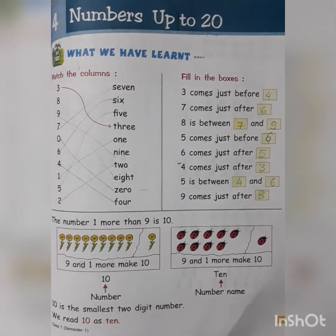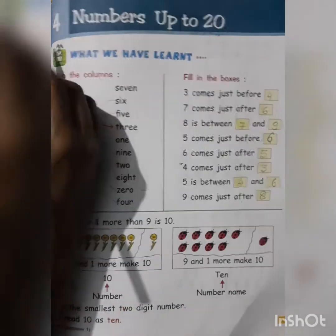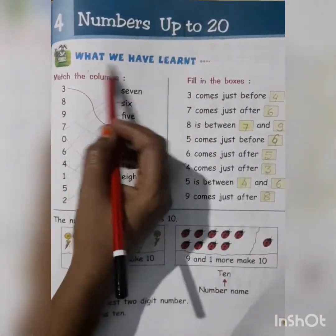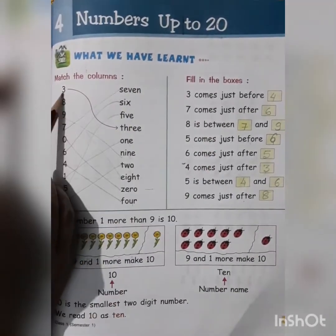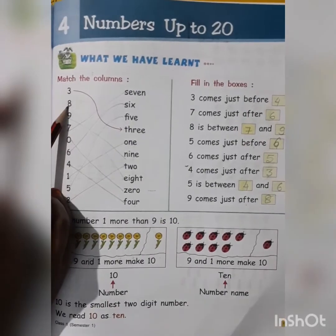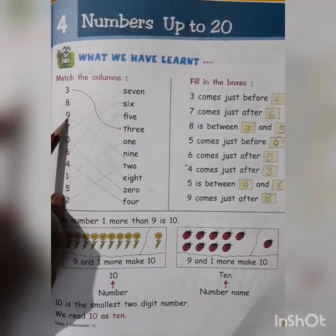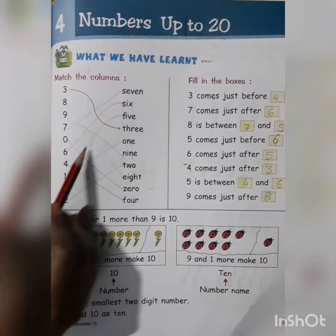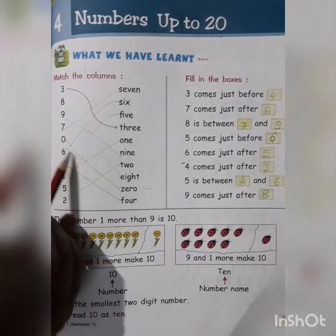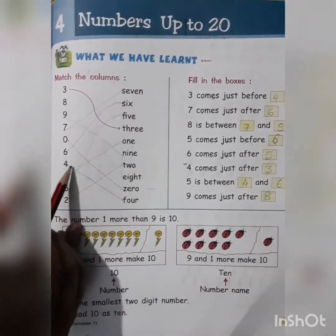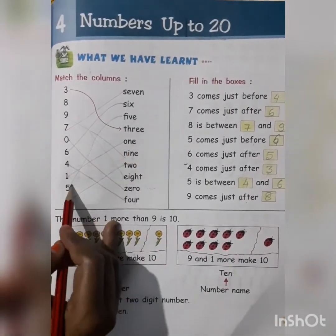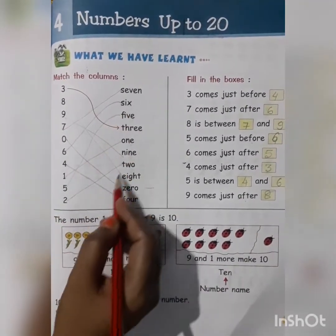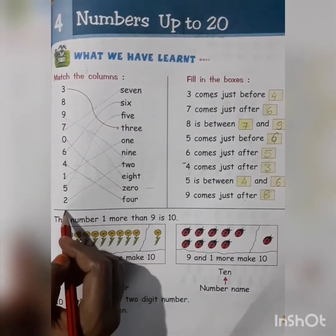Hey students, how are you all today? Today we are going to revise chapter number four, numbers up to 20. What we have learned, we will revise it once again. Match the columns: three, three, eight, eight, nine, nine, seven, seven, zero, zero, six, six, four, four, one, one, five, five, two, two. So we have matched the numbers in numeral with the numbers in word.